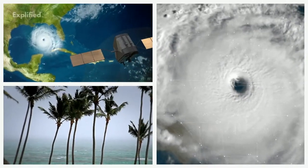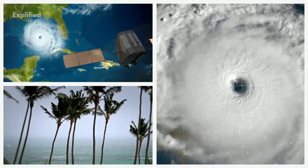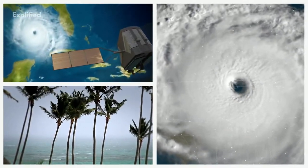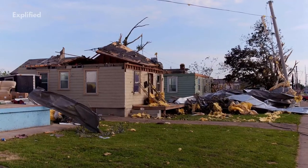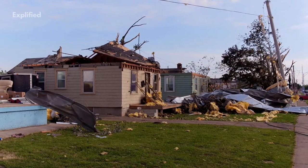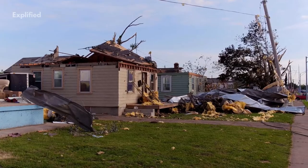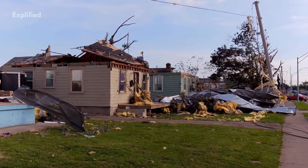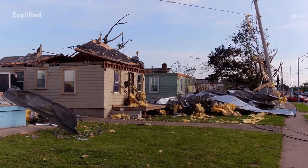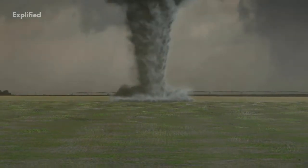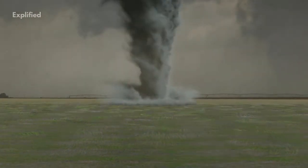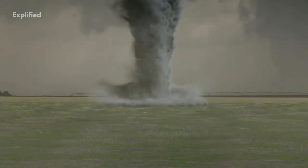A cyclone is a violent storm that originates over oceans and tropical areas and moves over to the coastal areas, bringing about a large scale of devastation due to violent winds, cumbersome rainfall and storm surge. It is an irregular wind movement involving closed circulation of air around a low-pressure centre.